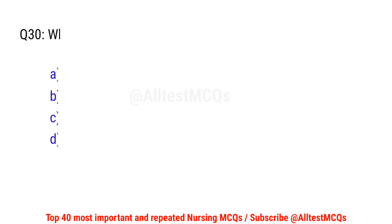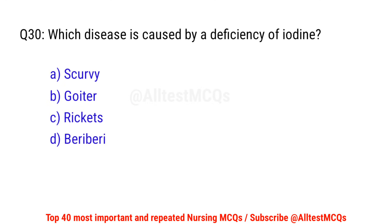Question No. 30: Which disease is caused by a deficiency of iodine? The right option is B: Goiter.